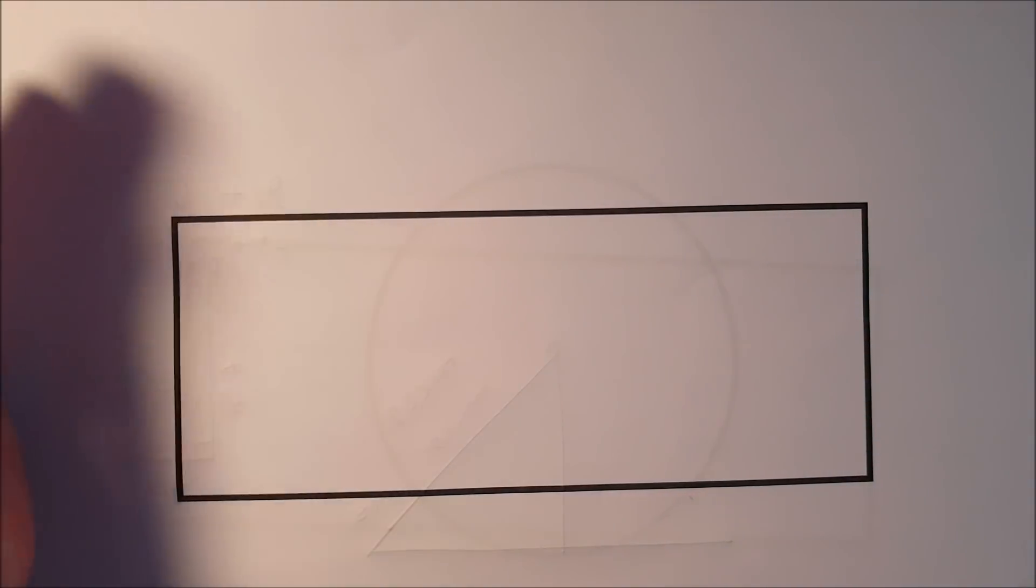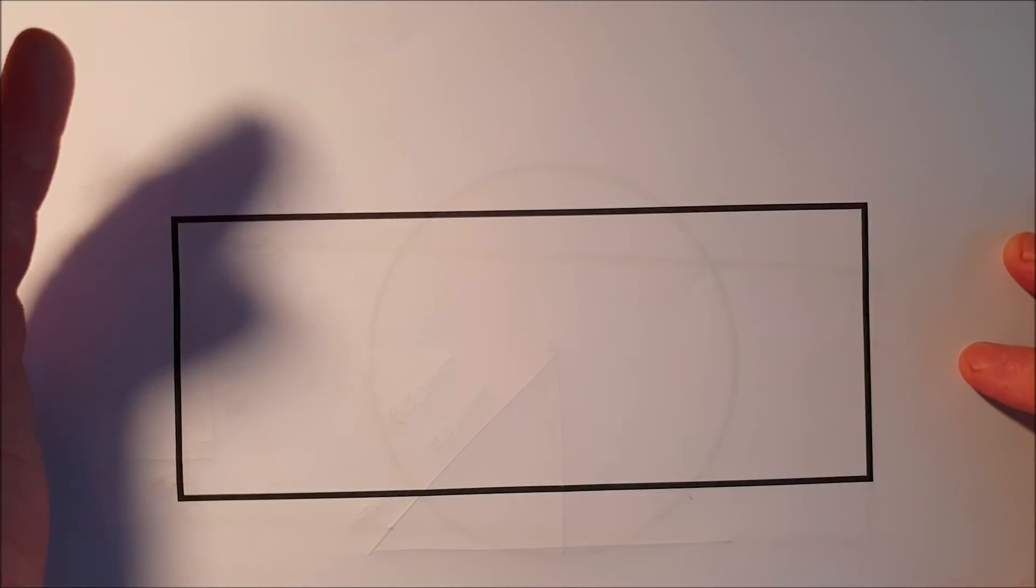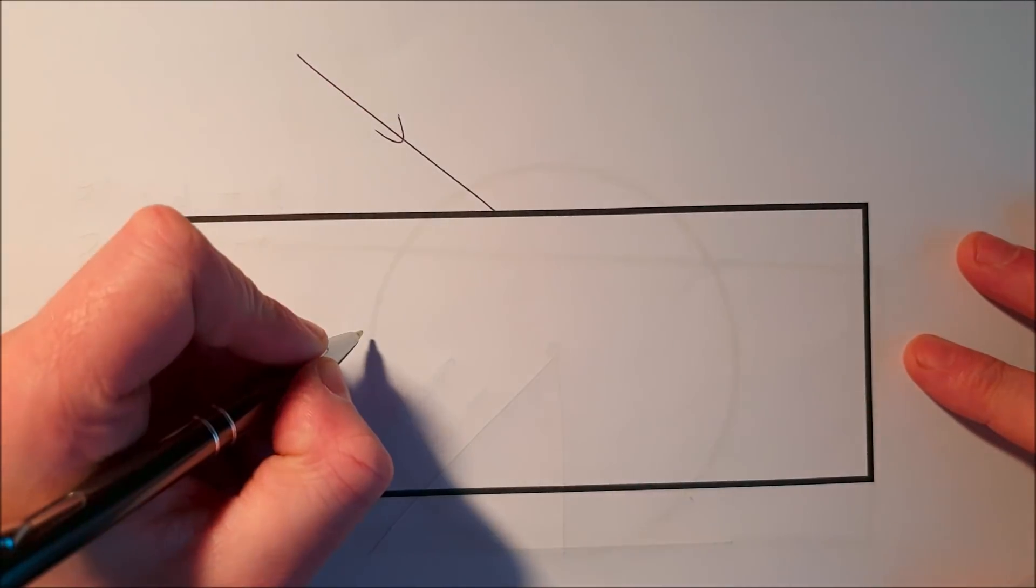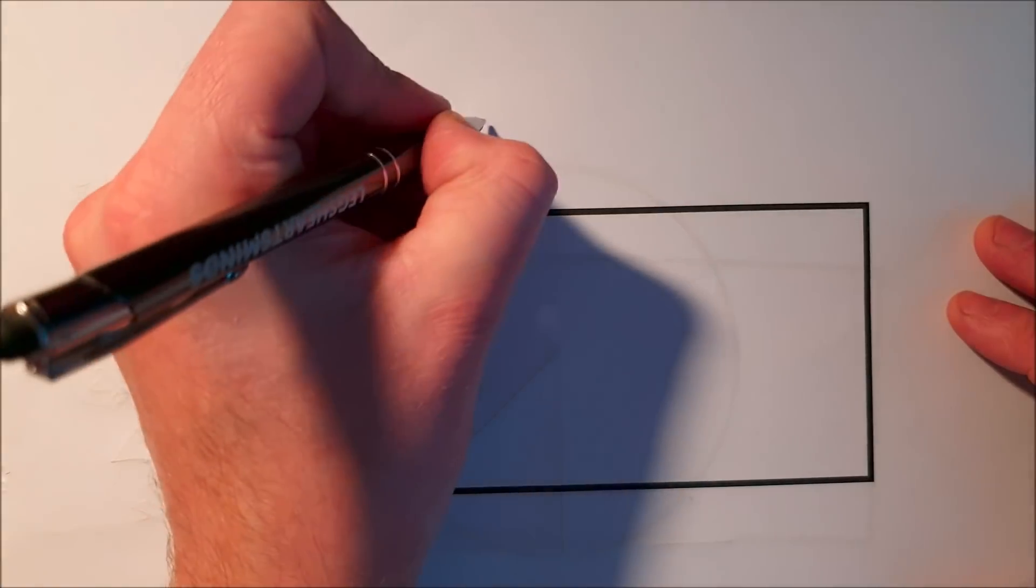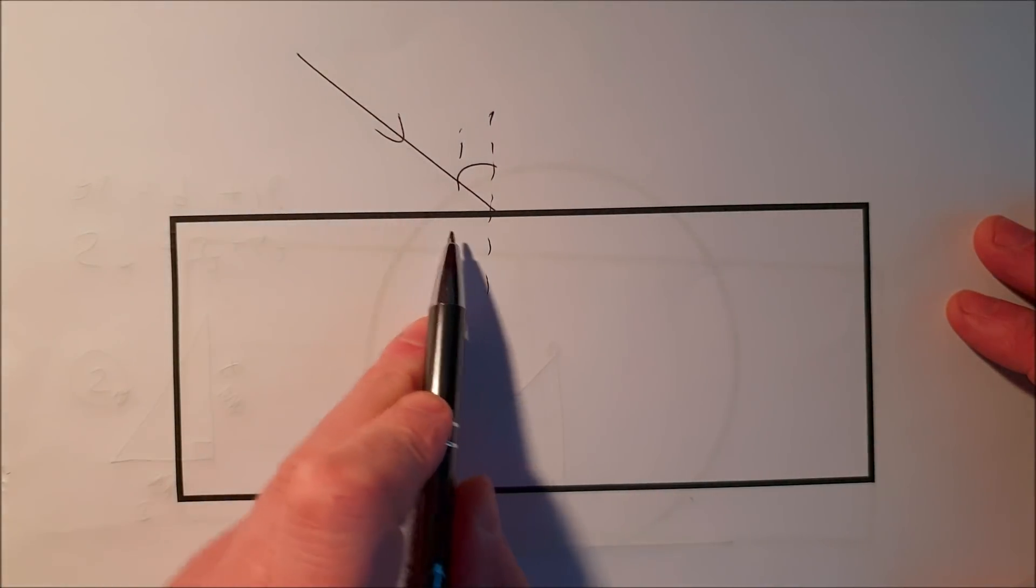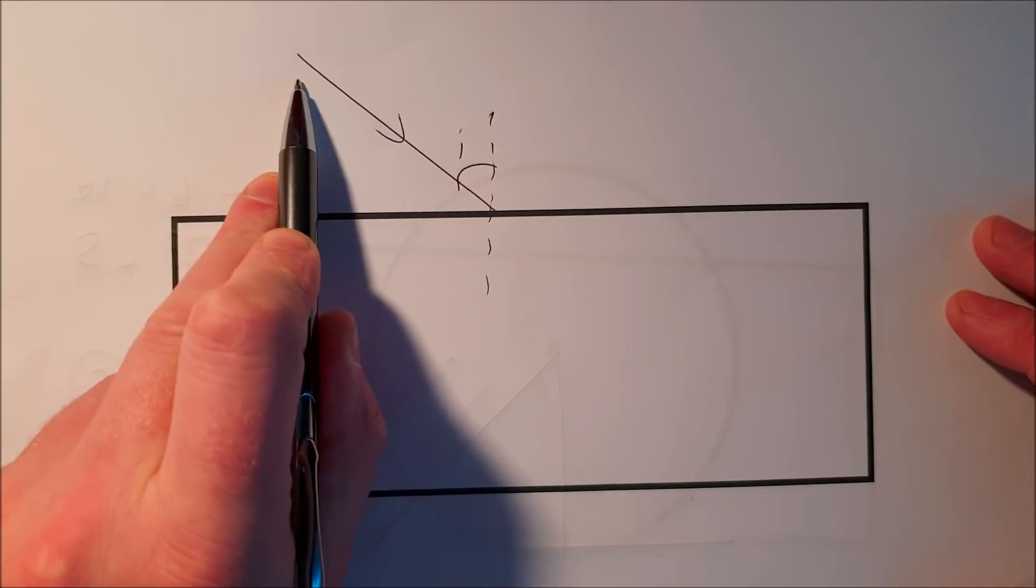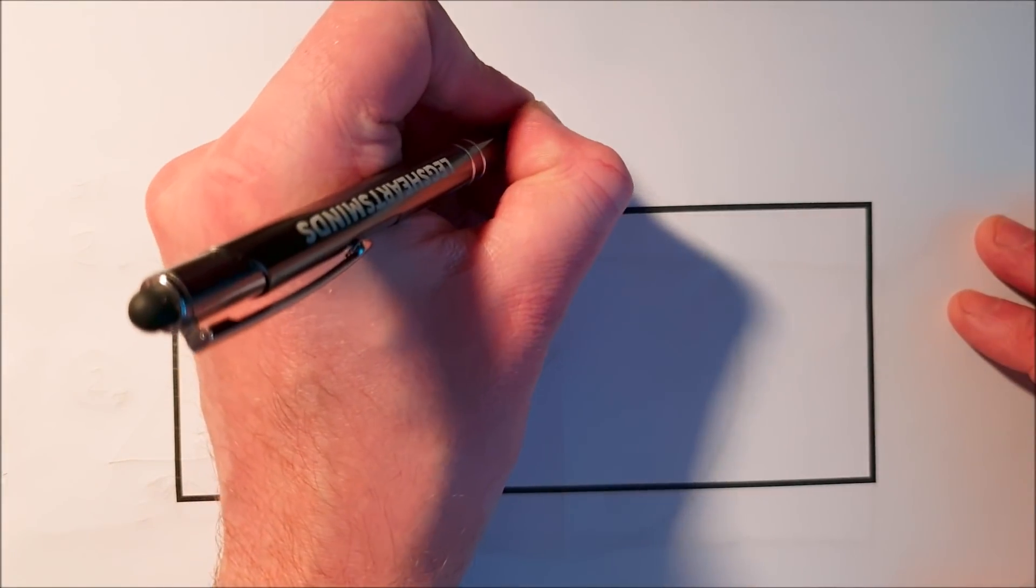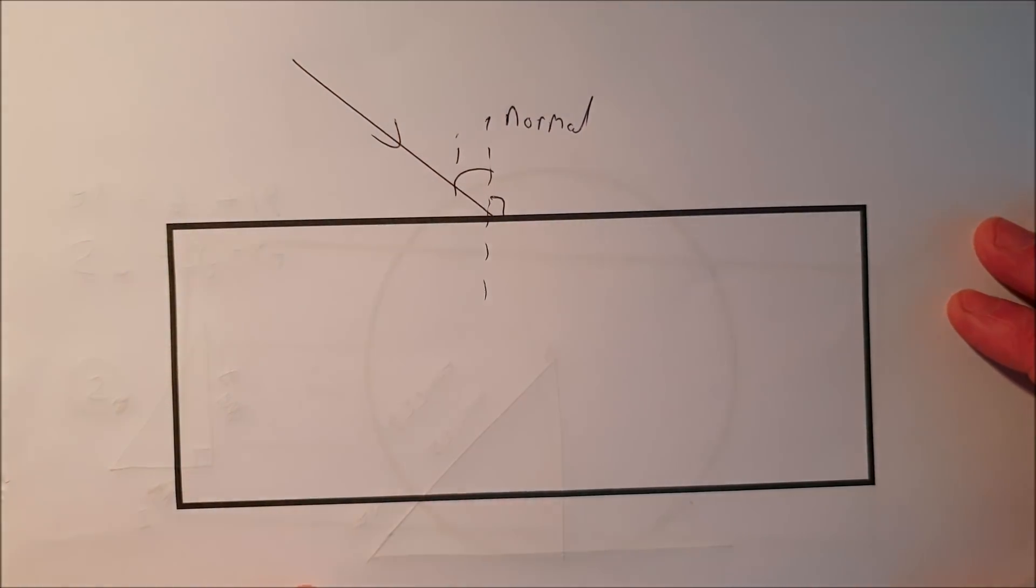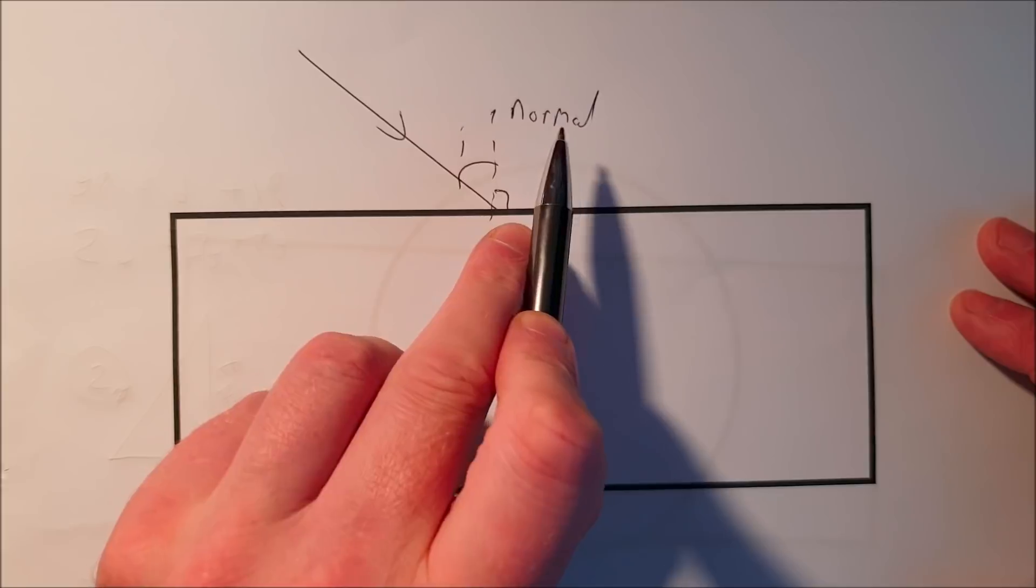If we're going to understand mirages, we've got to have a really good grasp of refraction. This should take about two minutes, then we'll apply it to mirages. When we were at school, we all took a ray of light and shone it into a glass block. We might have taken a protractor and measured this angle here, which is the angle of incidence - the angle that the ray of light enters compared to this imaginary line that's at 90 degrees to the surface of that rectangle. We call that imaginary line the normal line.